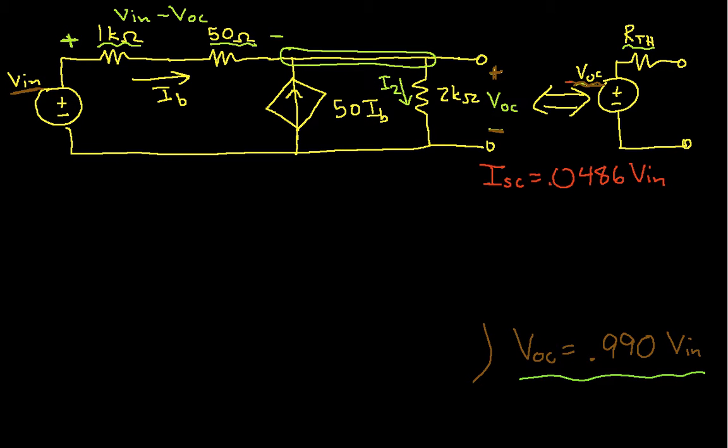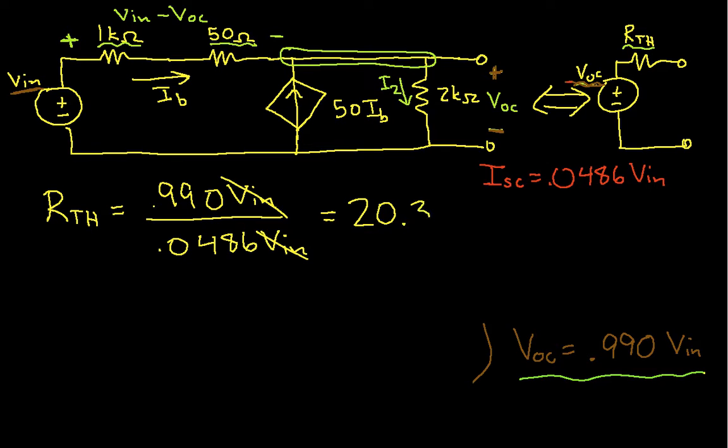So now we have then that the Thevenin equivalent resistance is given by the open circuit voltage, which is 0.990*VIN, divided by the short circuit current, which is 0.0486*VIN. And so the VINs here will cancel. And so if we do the computation, we get then that the Thevenin equivalent resistance is 20.37 ohms.